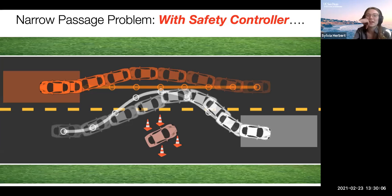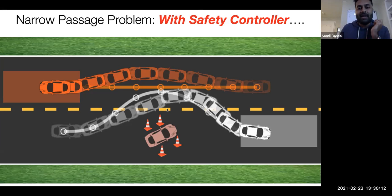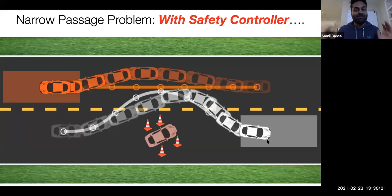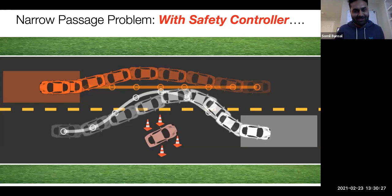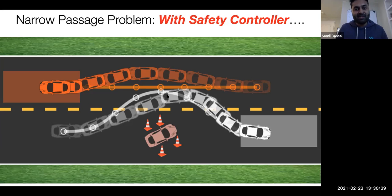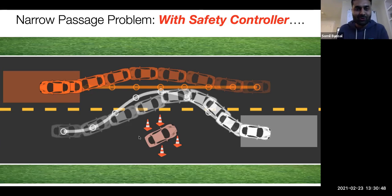A student asks: are the vehicles moving at constant speed? No — it's a ten-dimensional system, with each vehicle having a five-dimensional state: X, Y, speed, heading, and steering angle. The reachability solution is scenario-dependent: if it's possible to maintain speed and reach the target faster, reachability gives that solution. In other scenarios where the vehicle is moving too fast, it might need to come to a complete stop. These solutions all emerge automatically from reachability.